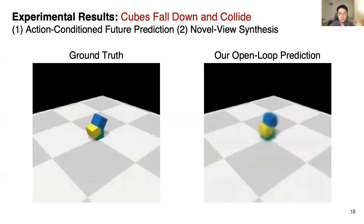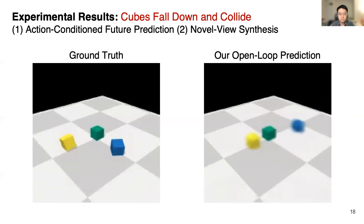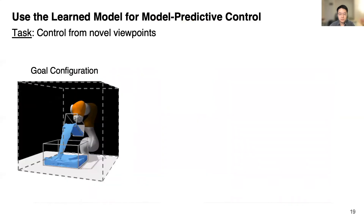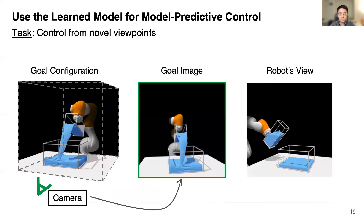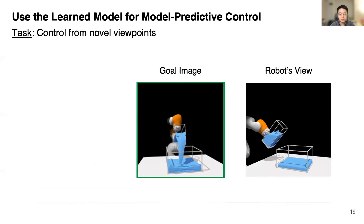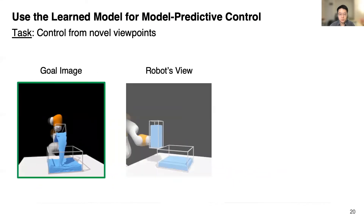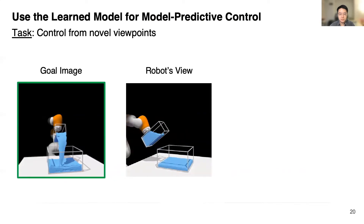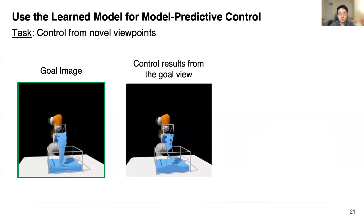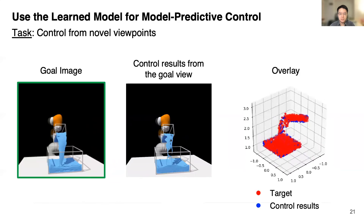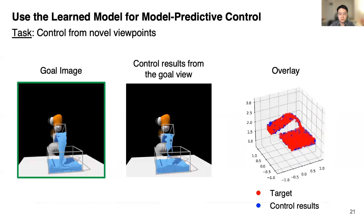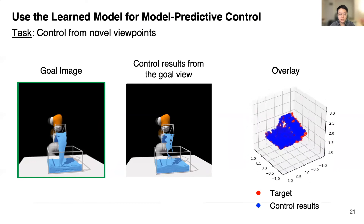Here's another example where three cubes fall down and collide with each other. Given the learned dynamics model, how well can it facilitate downstream control tasks, especially control from novel viewpoints? The task is to match the fluid shape in 3D depicted in a goal image at the end of the control episode. The robot only takes a visual observation from one camera with a viewpoint vastly different from the goal. We extract the fluid particles from the underlying simulator and show the overlay between the resulting configuration and the goal. Our model matches the target configuration with decent accuracy.